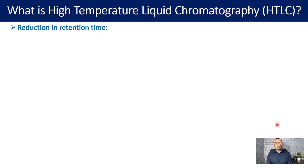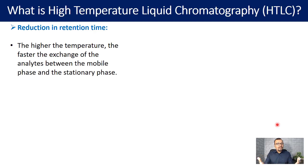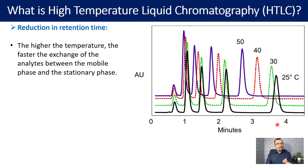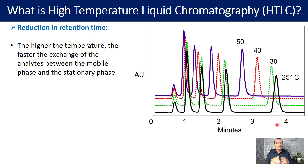The second important point for considering high temperature liquid chromatography is the reduction in retention time. The higher the temperature, the faster the exchange of analytes between the mobile phase and the stationary phase, and because of that you can expect a reduction in retention time. Chromatograms can show how retention time changes with temperature increases from 25 to 30 to 40 and 50 degrees Celsius. However, one has to be cautious about resolution — as long as resolution is not compromised, you can certainly think of increasing the temperature.